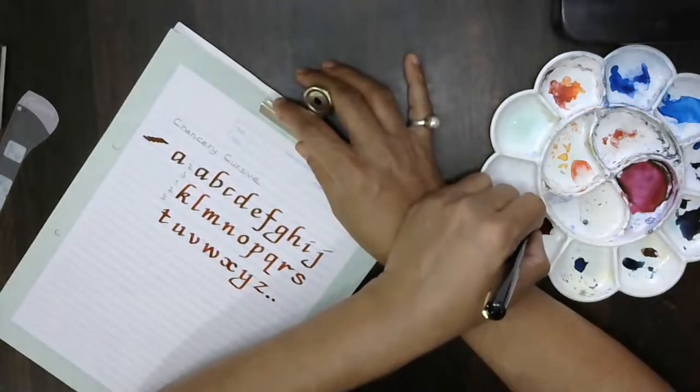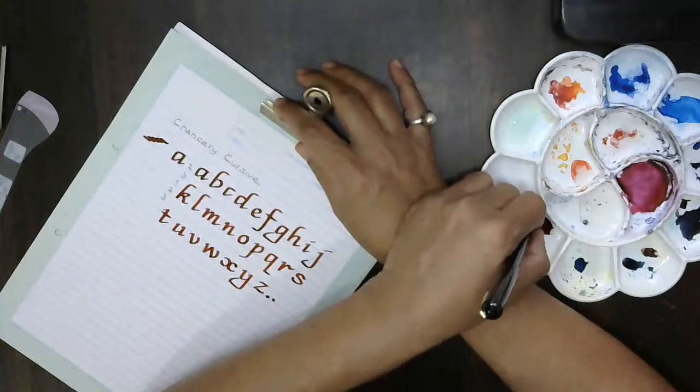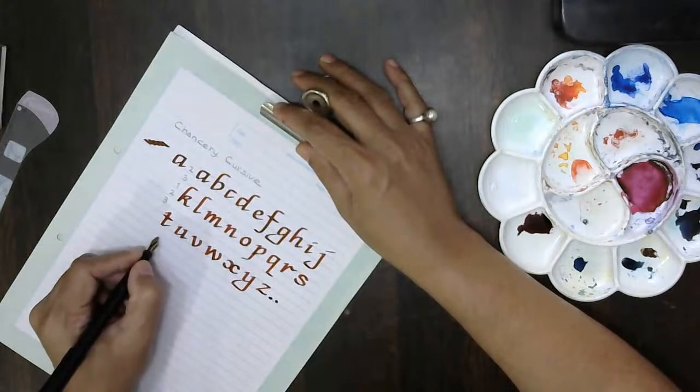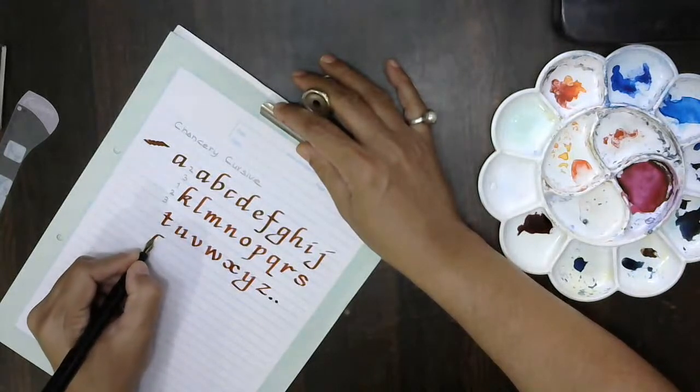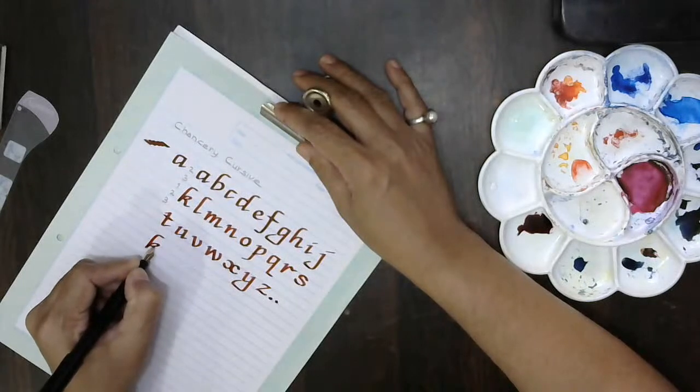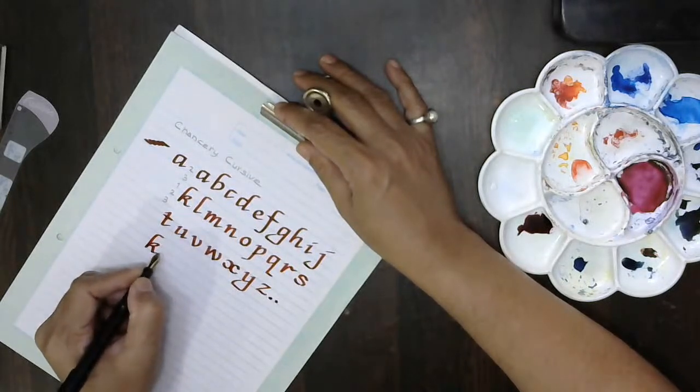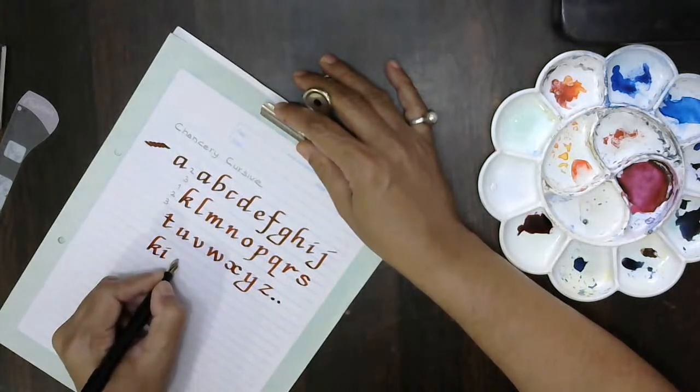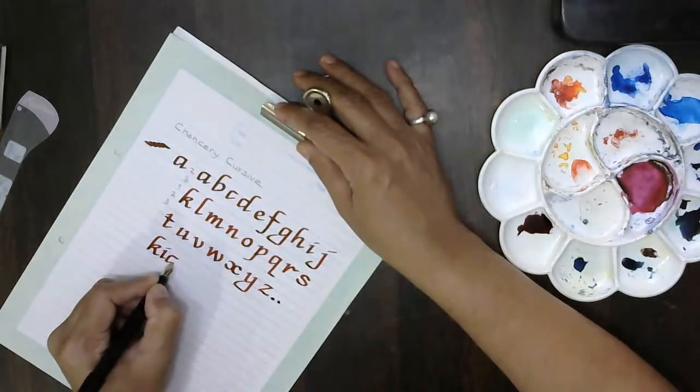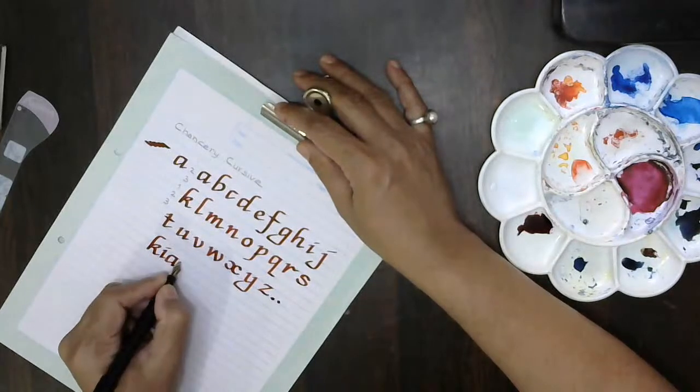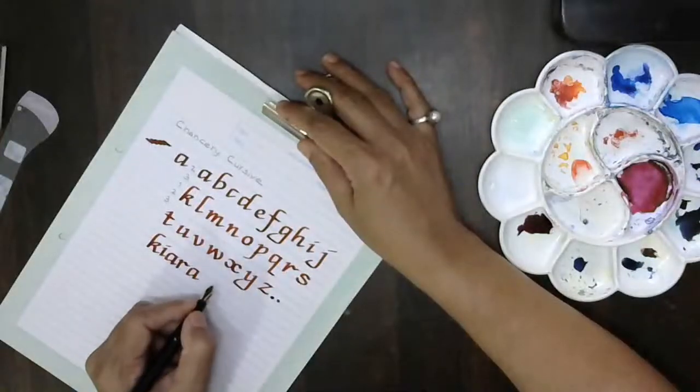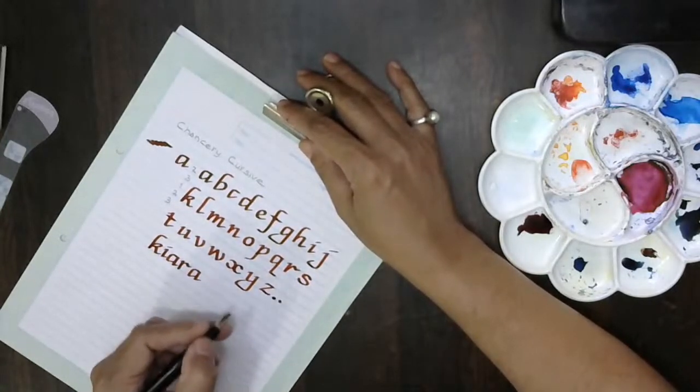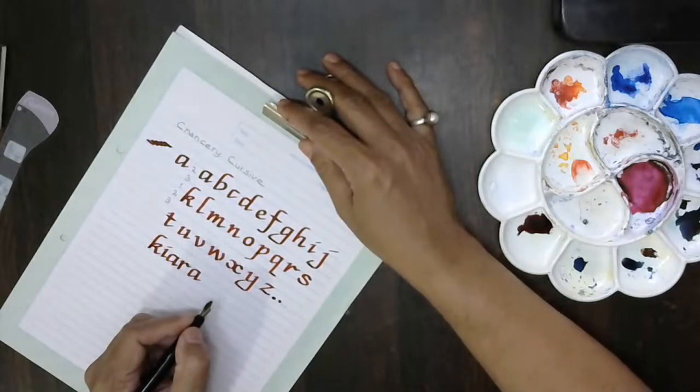So suppose Kiara is there, I think, so let me write Kiara's name. So I'll start from here. K-i-a-r-a. With the capitals, rather the uppercase writing, that time I will do the normal way of writing the names.